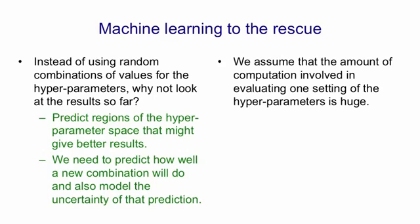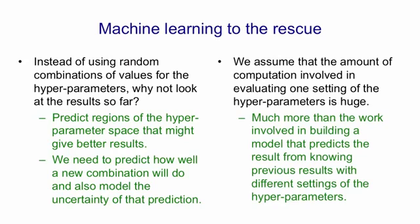We're going to assume that the amount of computation involved in evaluating one setting of the hyperparameters is huge — it involves training a big neural network on a huge dataset and might take several days on a big computer. Relative to that, building a model to predict how well a setting will do, given all the settings we've experimented with so far, is much less work. It requires much less computation to fit the predictive model than it is to run a single experiment.